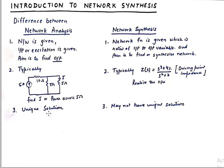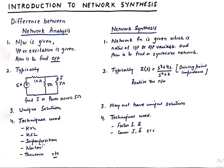A third point of difference is that network analysis has a unique solution. I have some videos where I solve a network using five different techniques and in all those techniques I get exactly the same answer. In network synthesis, the solution may not be unique. The last point of difference is the techniques: network analysis uses KCL, KVL, superposition, Norton, Thevenin, maximum power transfer theorem, reciprocity theorem, etc., while network synthesis uses RC networks, RL networks, Foster's first and second forms, Cauer's first and second forms, etc.